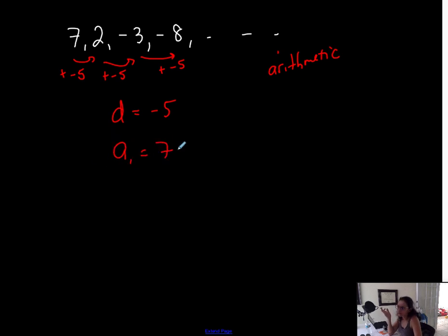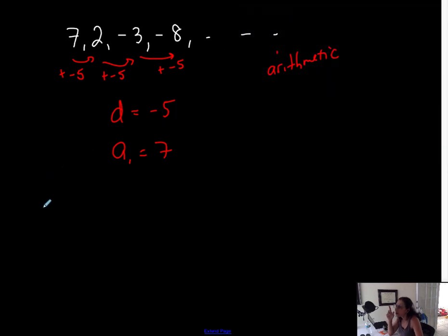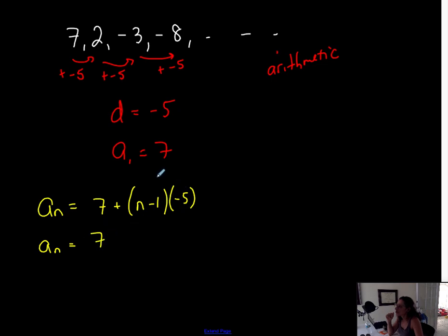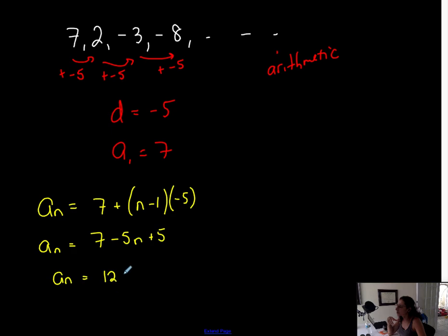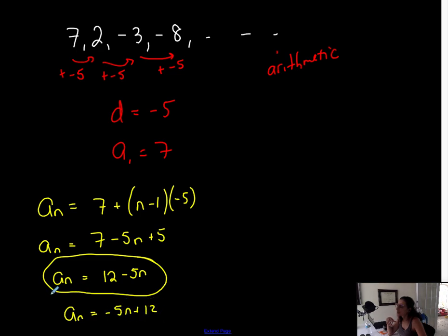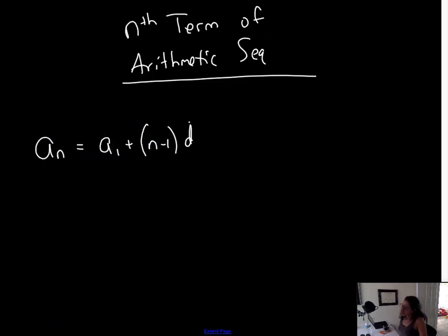The first term is 7. So I can write the nth term: it's 7 plus n minus 1 times d, which is negative 5. Sometimes they ask for it in this form, but distributing the negative 5 gives minus 5n plus 5, so the nth term is 12 minus 5n. You can also represent it as negative 5n plus 12. They're both the same. So this is your arithmetic sequence and this is your formula for the nth term.